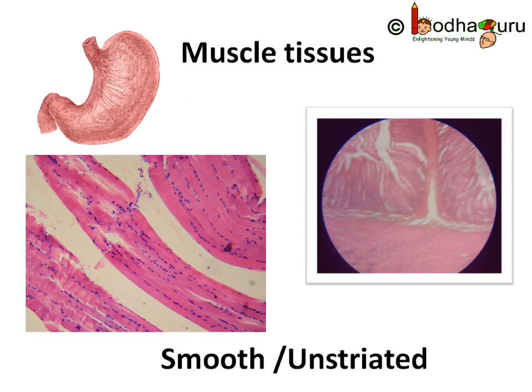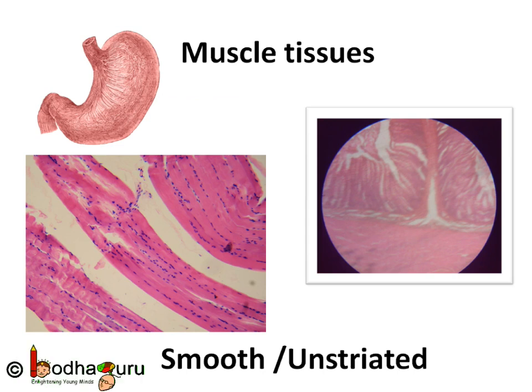The muscles found in the stomach, intestine, and iris of the eyes are involuntary muscles — that is, we cannot control them. These tissues are made of cells that are spindle-shaped, that is, long with pointed ends, and uninucleate, meaning they have a single nucleus. These muscles are known as unstriated muscles, as they do not show alternate stripes when seen under the microscope, as in the case of skeletal muscles.